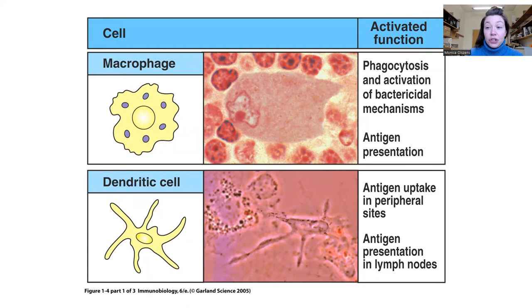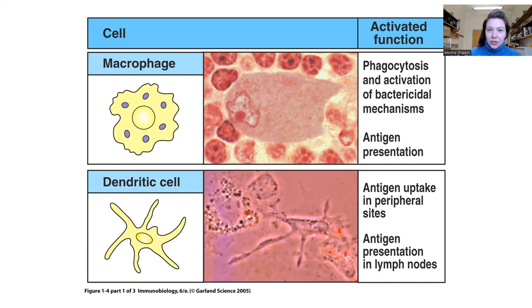We haven't talked about antigen presentation yet — this is a new term. If you recall in lecture two, the structure of the lymph node had a macrophage area, a B cell area, and a T cell area. Antigen presentation is when a macrophage or a dendritic cell picks up the pathogen, eats it, breaks it down in the lysosome — which is the acidic stomach-like compartment in your cells — and then takes a tiny piece of that and presents it on the outside in a receptor. There will be many lectures on this.